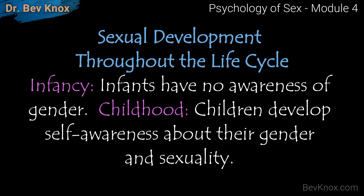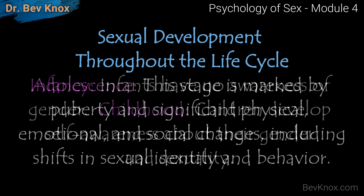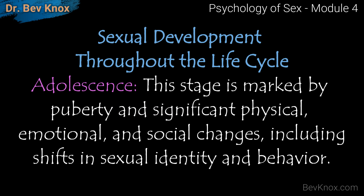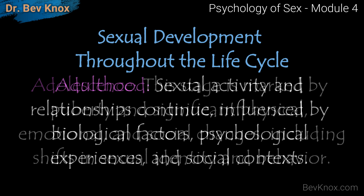When we speak of sexual development throughout the life cycle, we are referring to stages from infancy to older adulthood. During infancy, infants have no awareness of gender. In childhood, children develop self-awareness about their gender and sexuality. Then in adolescence, this stage is marked by puberty and significant physical, emotional, and social changes, including shifts in sexual identity and behavior.